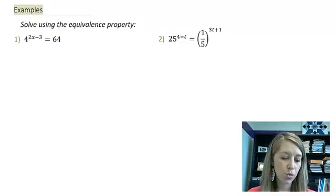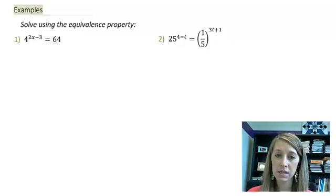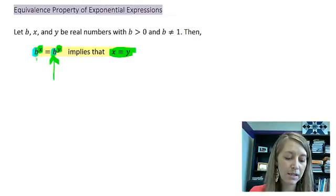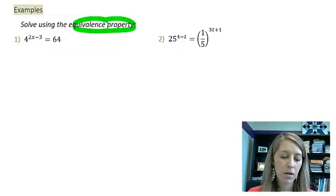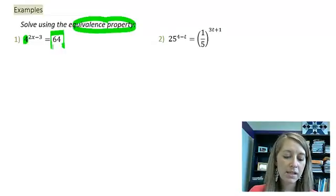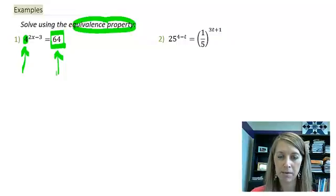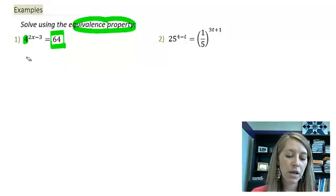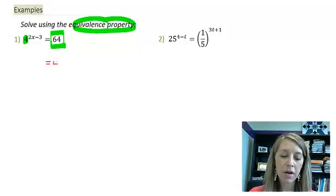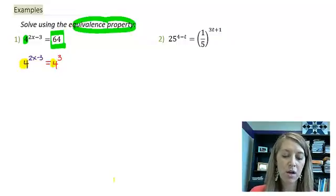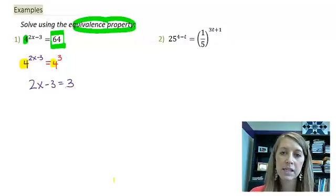I have two of them here. The first one, 4^(2x-3) = 64. I want to solve this by using my equivalence property, which means I want to convert this where I have my bases to be the exact same thing. Here I have the base of 4. Can I rewrite 64 to have the exact same base? This one is going to be easy because I know 64 is a power of 4. It is equal to 4 to the third power. If I just rewrite 64 as 4 to the third power, then that matches the same base on the left-hand side. So my bases match, which means I have the equivalence property, which means I just need to solve the equation where my exponents equal each other.